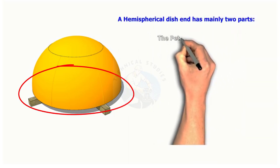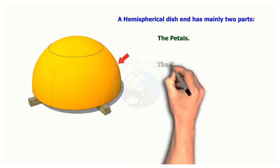A hemispherical dish head has two parts: the petals and the crown.